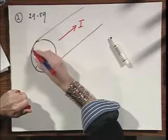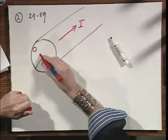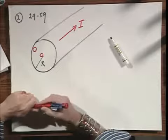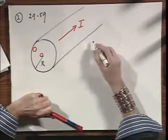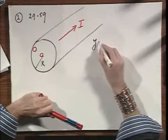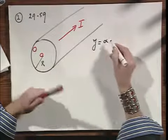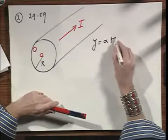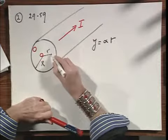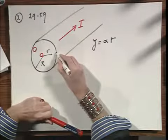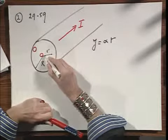In other words, per square centimeter more current flows here than what flows there. And it is a linear relationship. J, which is the current density, is some constant alpha times the radius r. So you see current density here is higher than here.